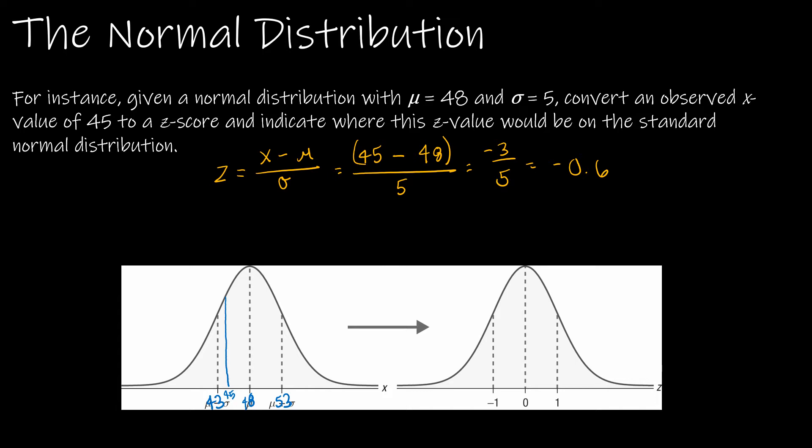45 minus 48 is negative 3 divided by 5 is negative 0.6. Now, what does that mean? Well, negative 0.6 is somewhere in here. And so if you can see, that's the same relative position on the normal distribution and the standard normal distribution. So that's exactly what a z-score does, is it just turns it into a standard score. Sometimes you'll even see it called a z-score or a standard z-score or something to that effect.